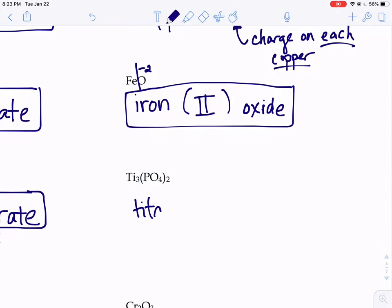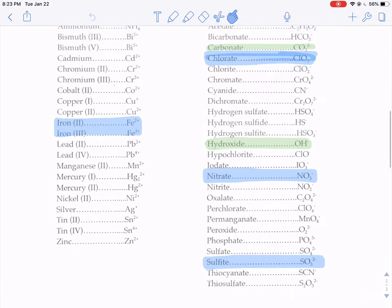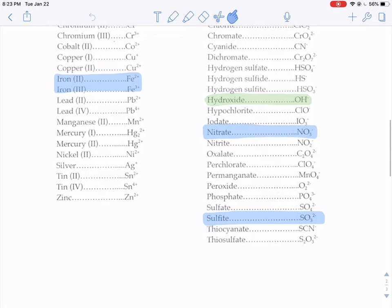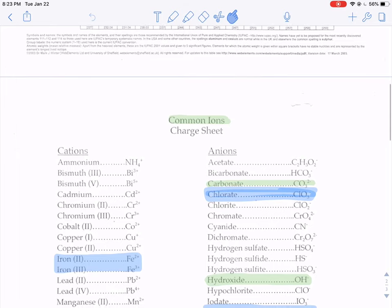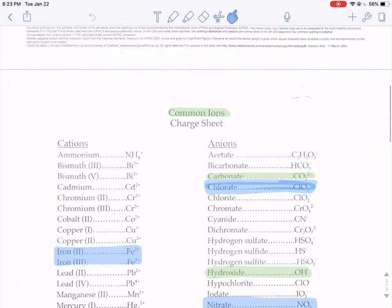Now, based on its location, we know that it's going to need a Roman numeral. So you might go to your chart sheet and say, all right, tell me about titanium. And then notice there is no titanium. It jumps right from tin to zinc. Well, again, these are common ions. It doesn't list every single one that's out there. So what do we do?